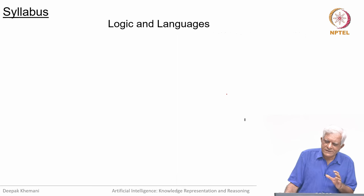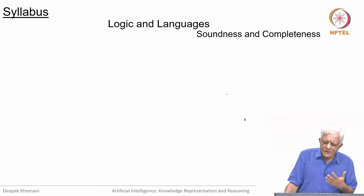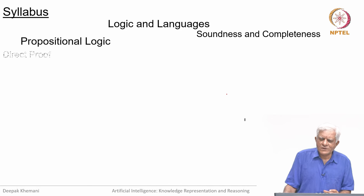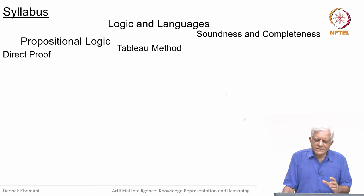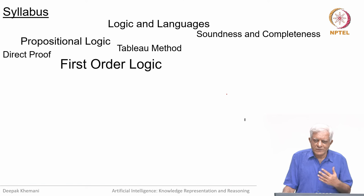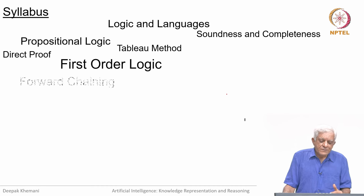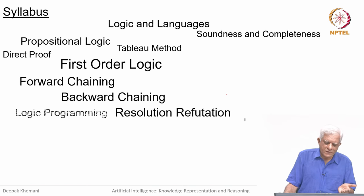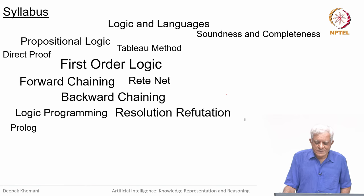The syllabus we will cover in this course starts with introducing logic and symbolic representation. We will talk about soundness and completeness, then start with the simplest logic — propositional logic — and study proof methods: the direct proof and the tableau method. We then move on to the main part of the course, which is first-order logic, where we will look at algorithms like forward chaining, backward chaining, and the resolution method. We will look at their connection to logic programming and declarative programming. An example will be Prolog, and we will also look at forward chaining as a declarative language using the Rete net.